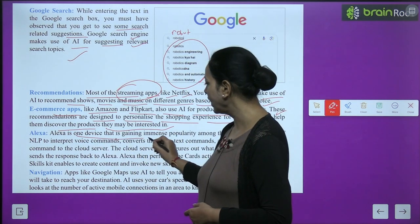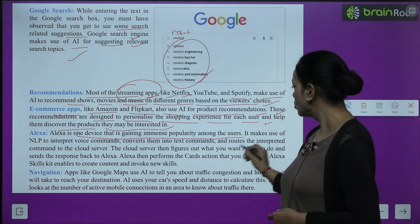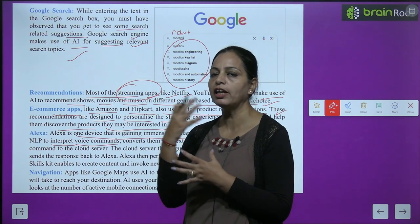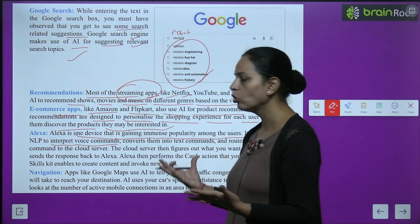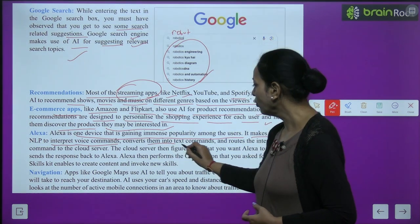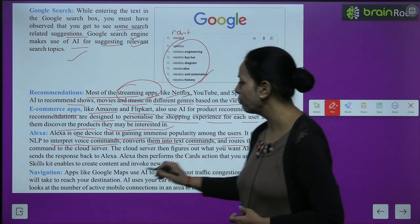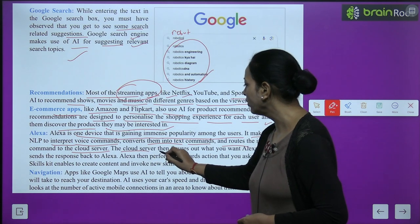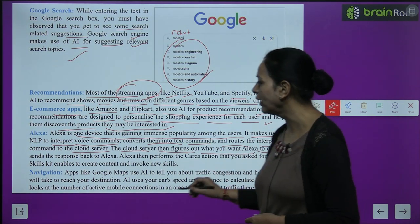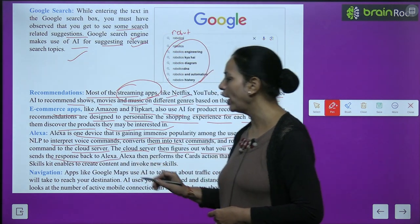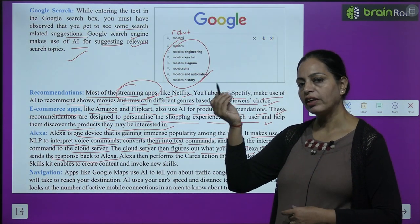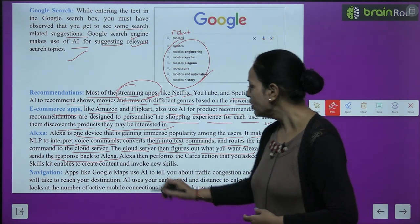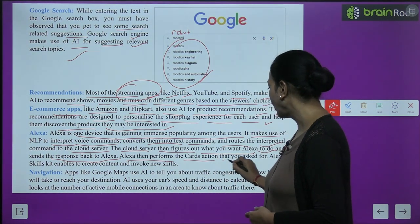Alexa is one device that is gaining immense popularity among users. It makes use of NLP to interpret voice commands, then converts them into text commands and routes the interpreted command to the cloud server. The cloud server figures out what you want Alexa to do and sends the response back to Alexa, which then performs the action that you asked for. Alexa Skills Kit enables it to create content and invoke new skills.